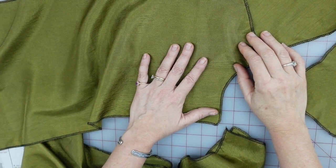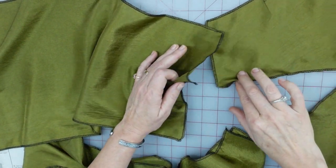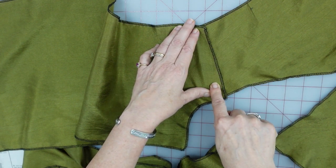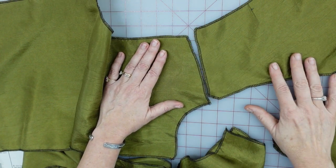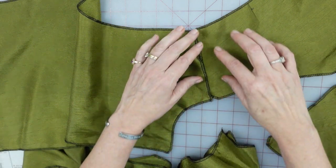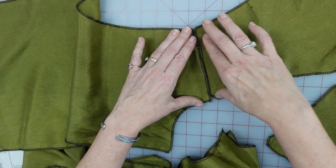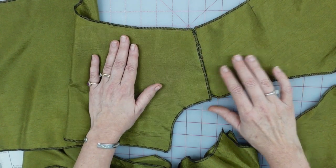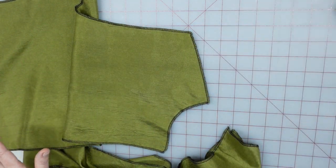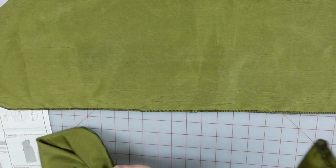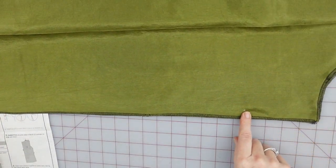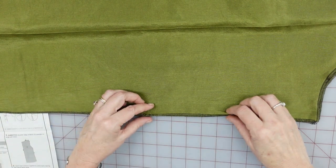I have my individual back pieces serged around, and I want to show you one more thing. The directions want you to ease stitch on the back edge before you sew it to the front. I see no point in that, because it's the same size. This is the point where they would be sewn together. There might be a quarter inch in there somewhere, but I don't see it. So, again, I am skipping that ease stitching direction, just because I don't see a point in it.